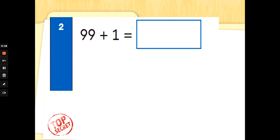So a good special agent always reads the question first. 99 add 1. Add 1, just count on one more. 99 add 1. That's it. 100. Well done.